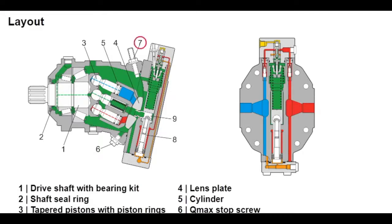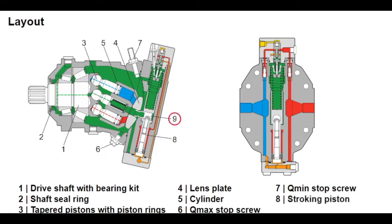The swivel angle is changed hydraulically using the stroking piston (8) and positioning trunnion (9). Here the cylinder, including piston and lens plate, is swiveled. The lens plate is smoothly mounted in a slipway. The swivel angle of the bent axis rotary group can be infinitely varied by using HD, EP, HA, and DA control.